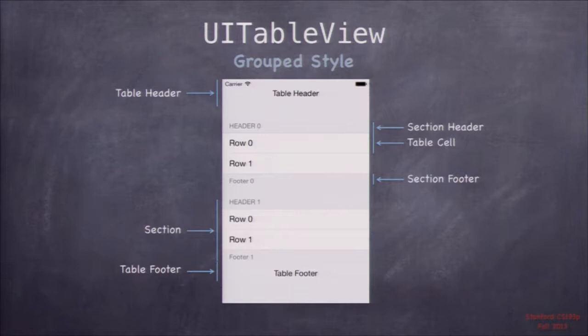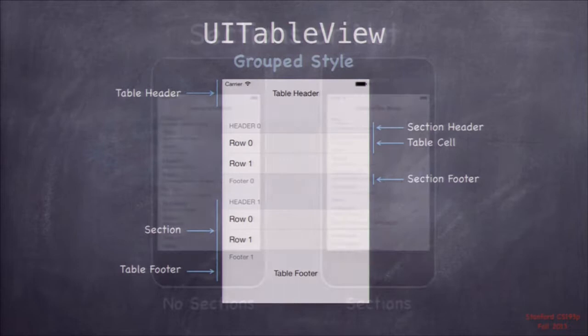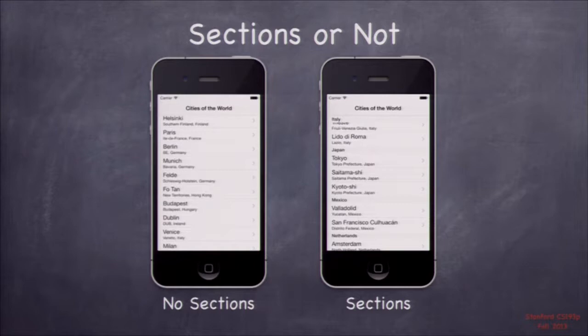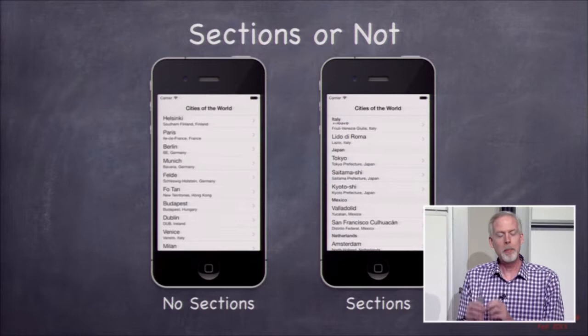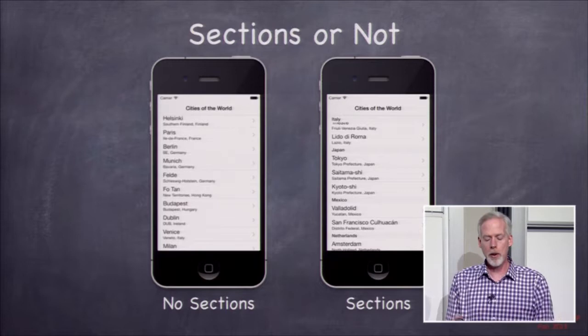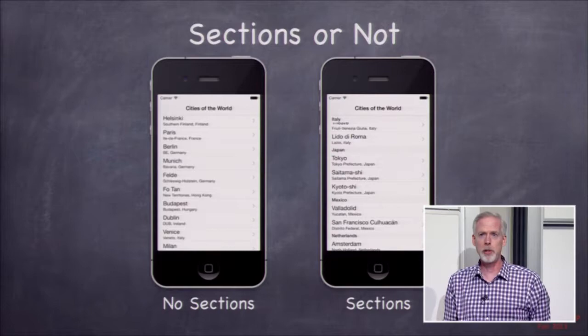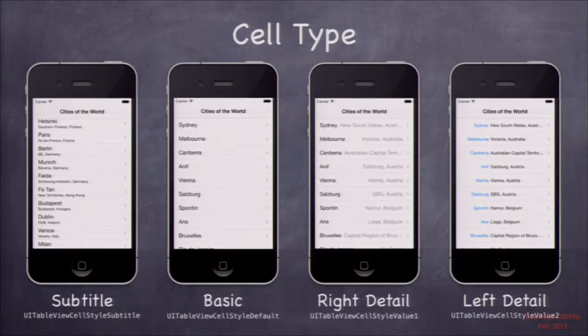That's what it looks like in plain style, and here's the same in grouped style — more gray background with sections grouped together. Sections are just a way to group rows. Here I have cities with no sections, and on the right the same cities are grouped by country: Japan has Tokyo and Kyoto, Mexico has its cities, Netherlands has Amsterdam. In your homework you'll group places by country, so you'll be using sections.